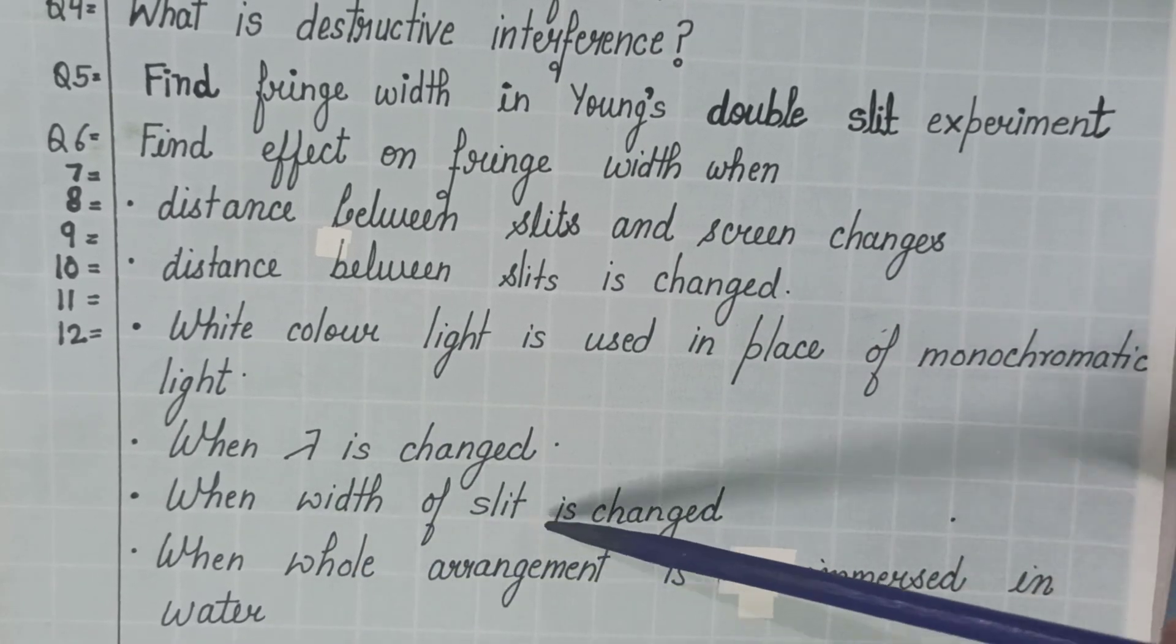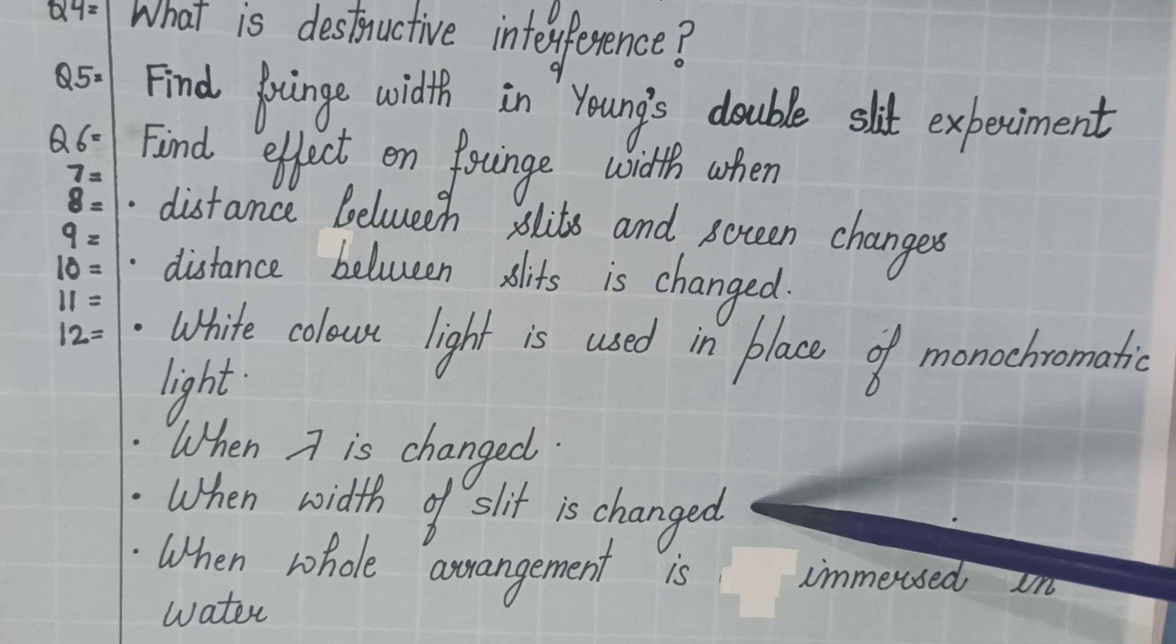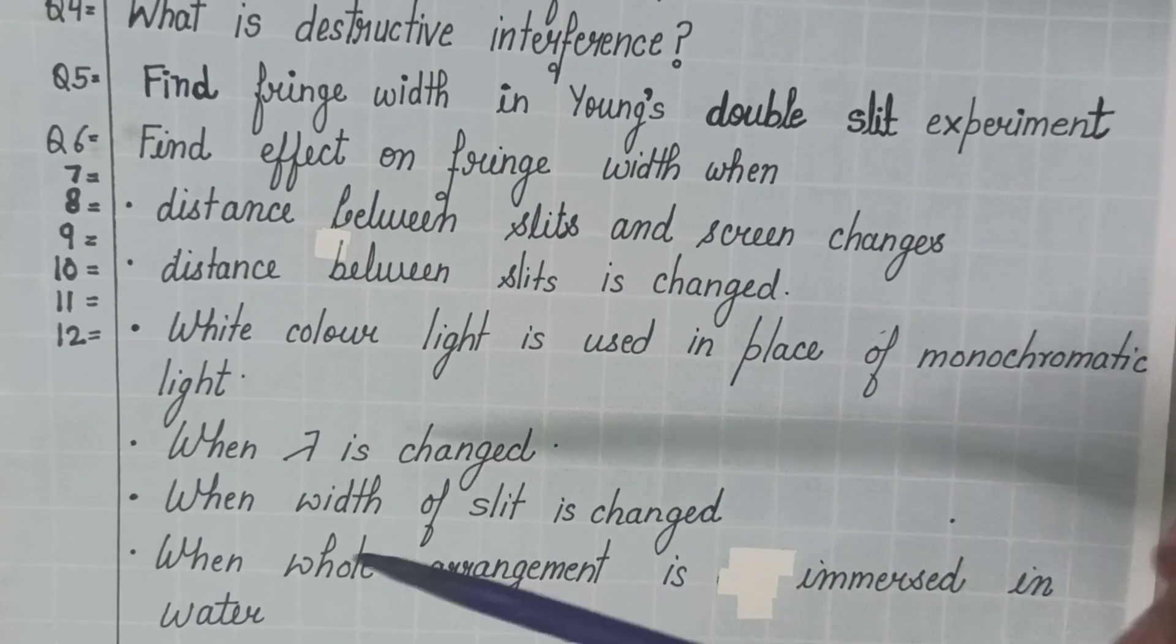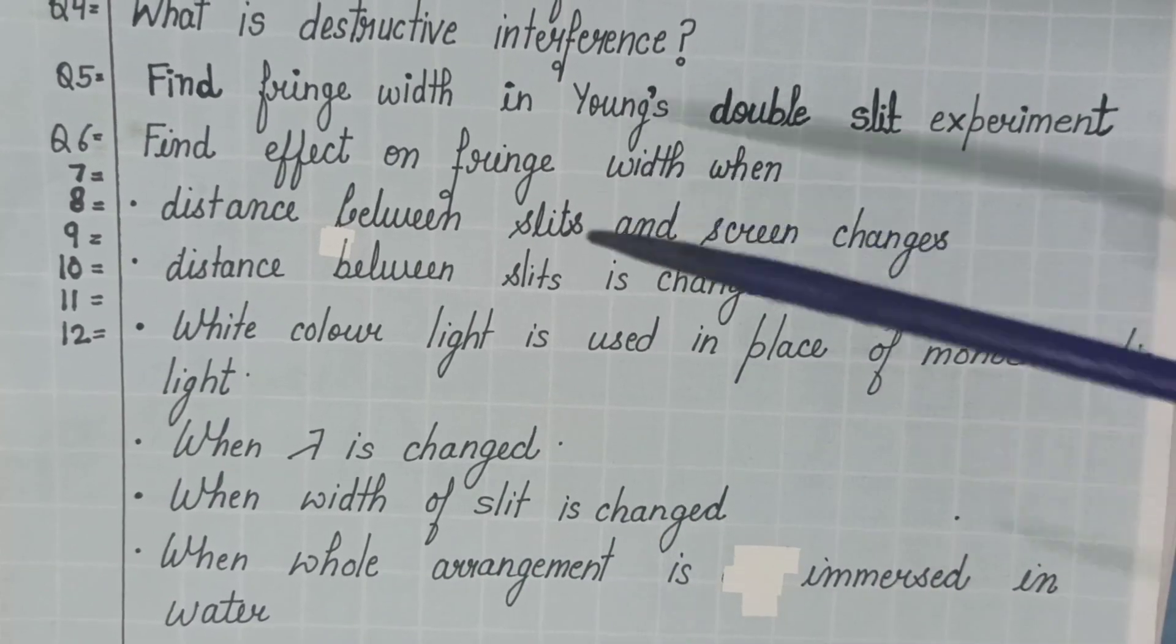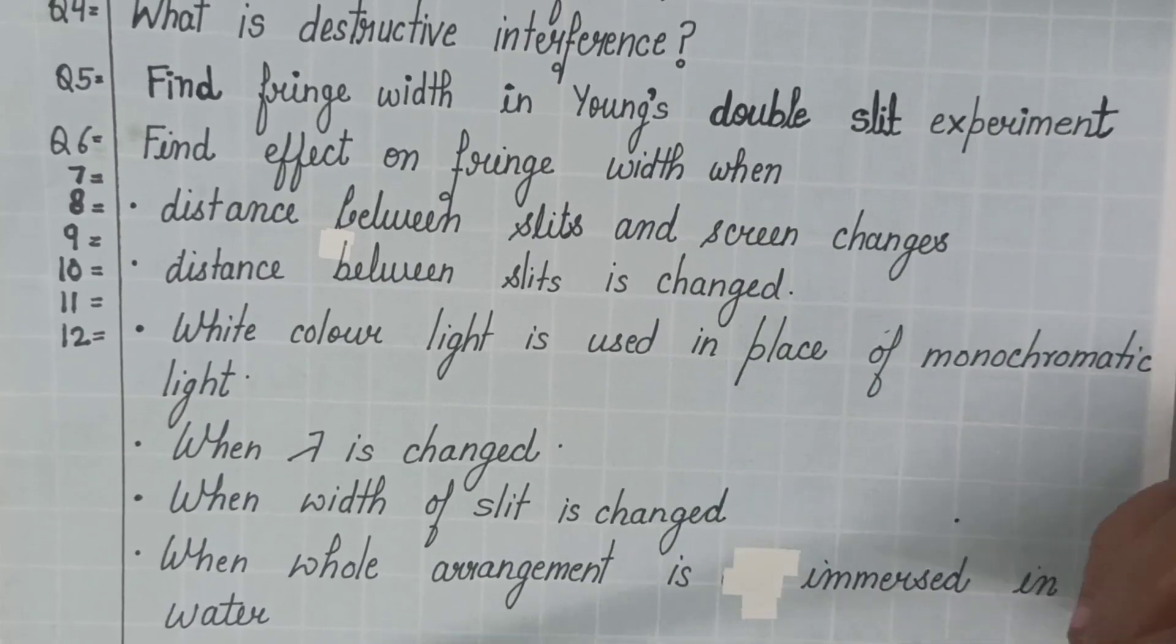Then, if width of the slit is changed, it is increased or decreased, then what will be changed in fringe width? When whole arrangement is immersed in water then what will be changed in fringe width? Next question is,